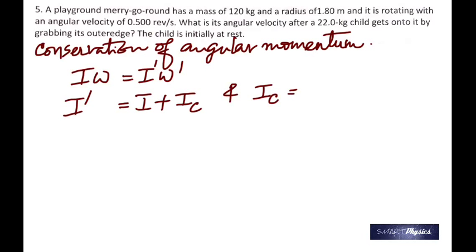So that's I prime. So I prime is the original moment of inertia I plus MR^2. That's the moment of inertia of the child. Now, why is it MR^2 for a child? Because it can be taken as a particle. So that's the formula for moment of inertia of a particle.